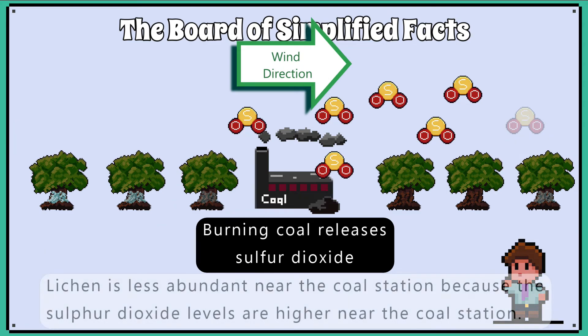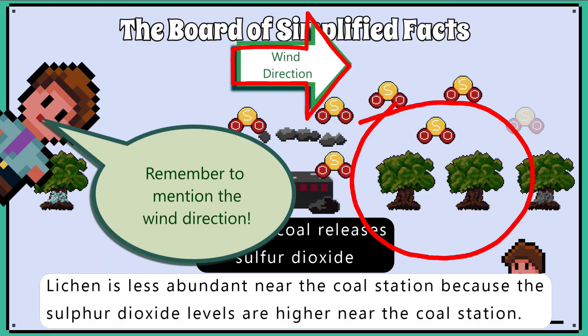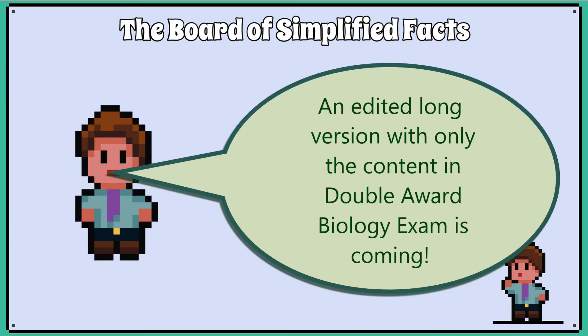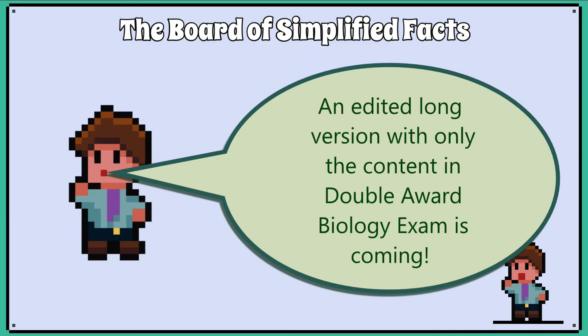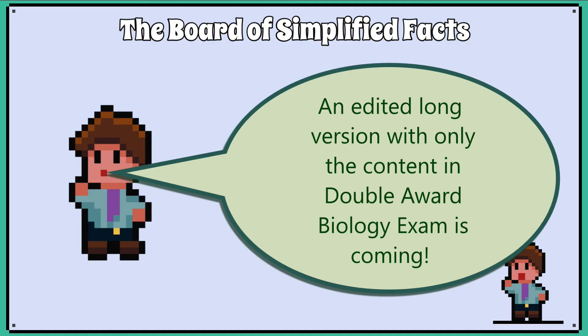Lichen is less abundant near the coal station because the sulfur dioxide levels are higher there. For double award, we have covered everything in your B1 biology exam. For triple award, we need to cover a little bit more, and we're going to move on to the carbon cycle.